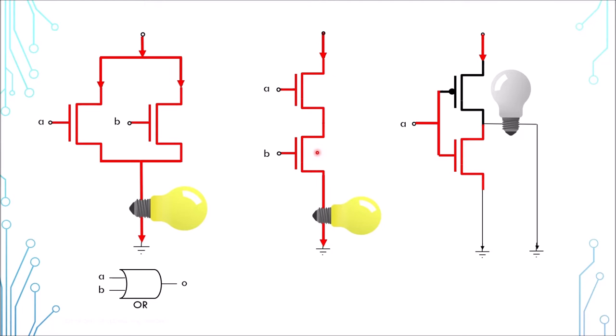At the rightmost arrangement, two transistors of different polarity are used, and they are controlled by the same input A. Only one of them can be turned on at one time. The load is turned on if input A is at logical 0 voltage. This forms a logical NOT gate.